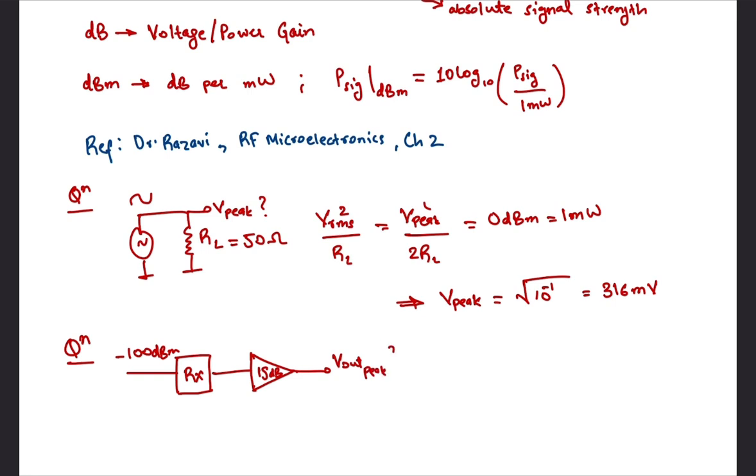We have to find the peak amplitude of the signal at the output of the amplifier. So the signal after being amplified by a gain of 15 dB would have a power of minus 85 dBm. Therefore 10 log P by 1 milliwatt equals to minus 85.